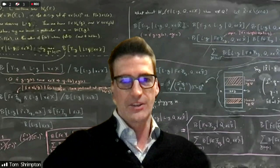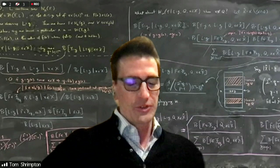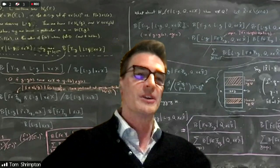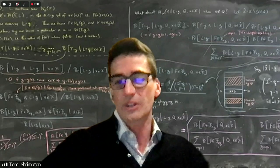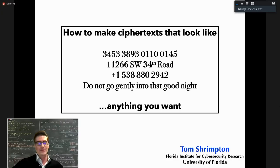This sequence of lectures is about a topic known as format-preserving or format-transforming encryption. A more interesting title might be: how to make ciphertexts that look like a credit card number, a U.S. street address, a U.S. telephone number, or some English-language text — basically how to make a ciphertext that looks like anything you want.